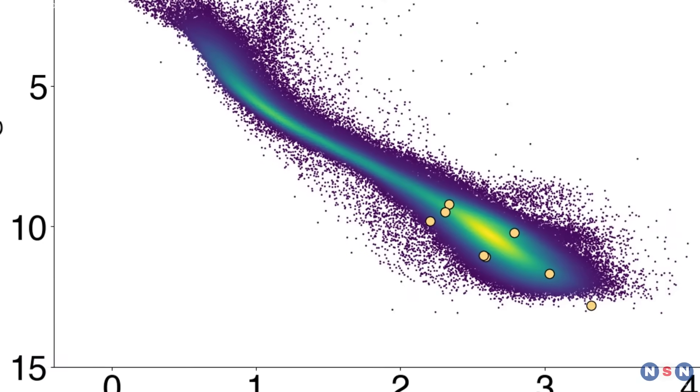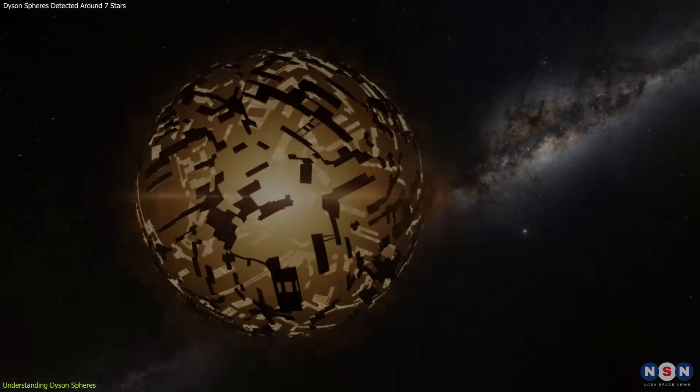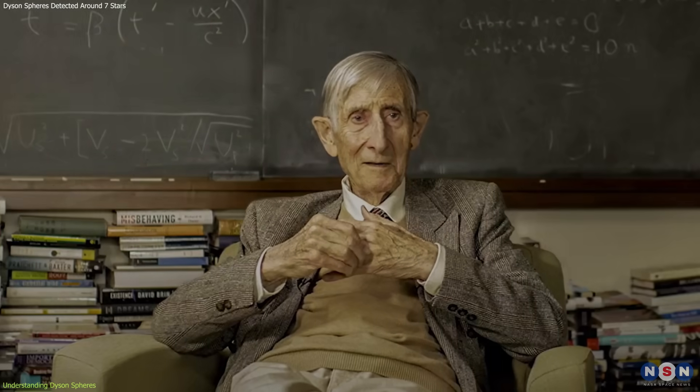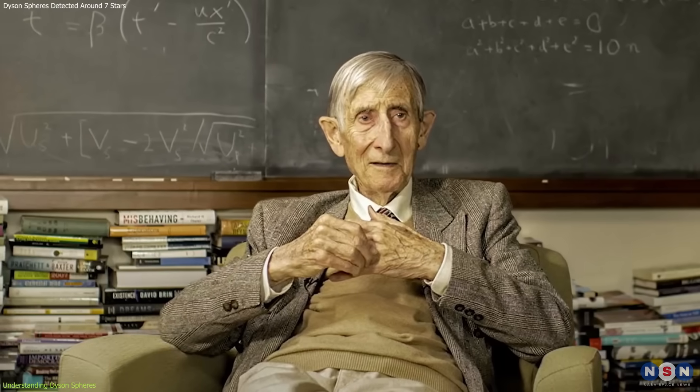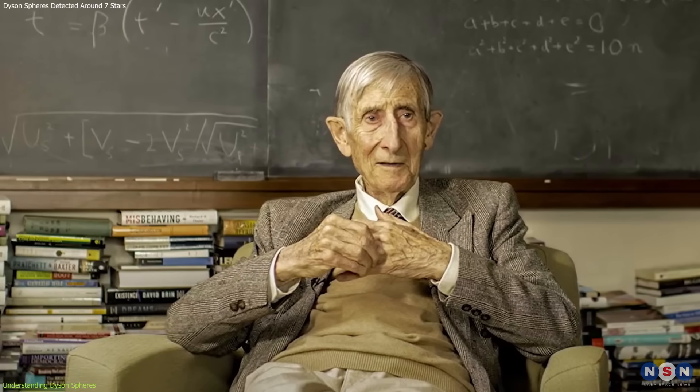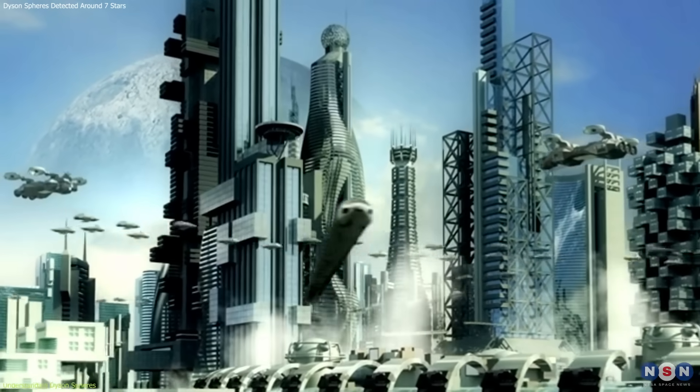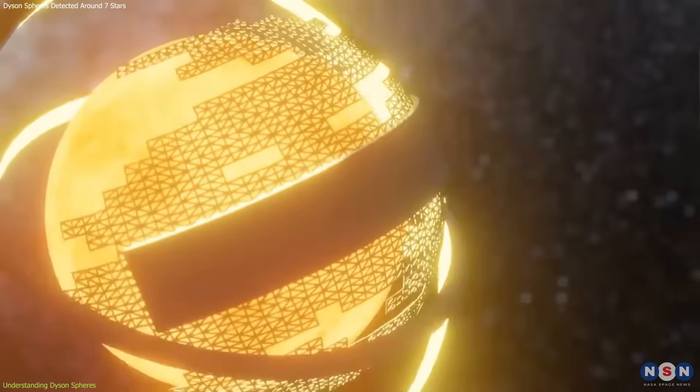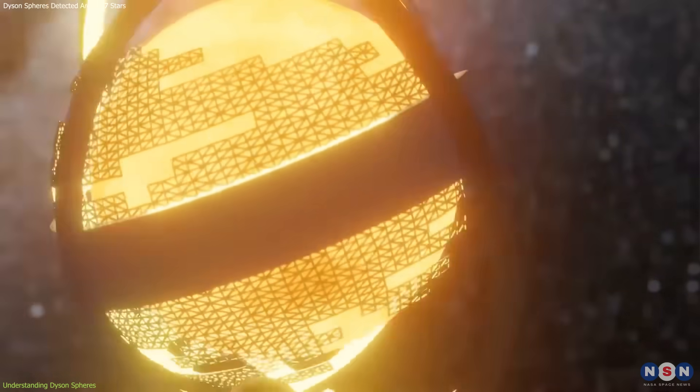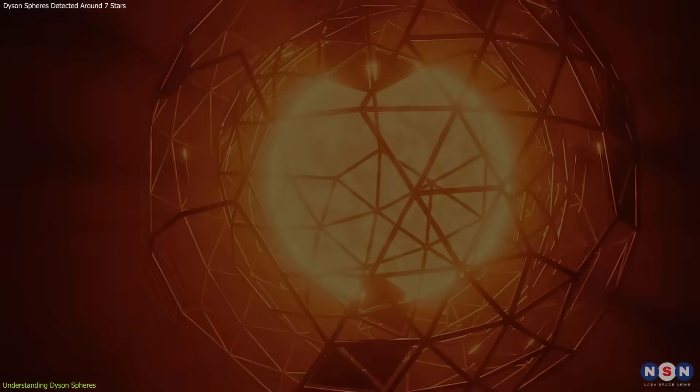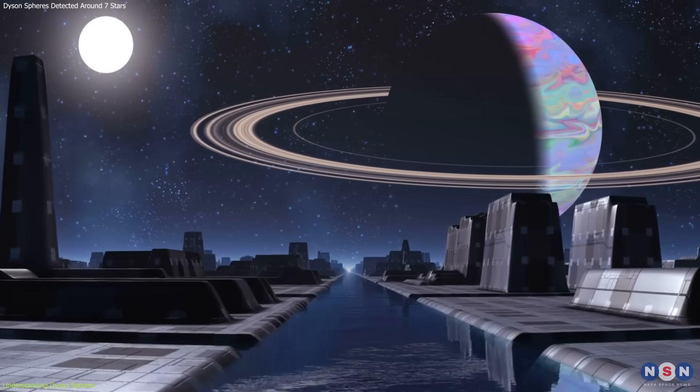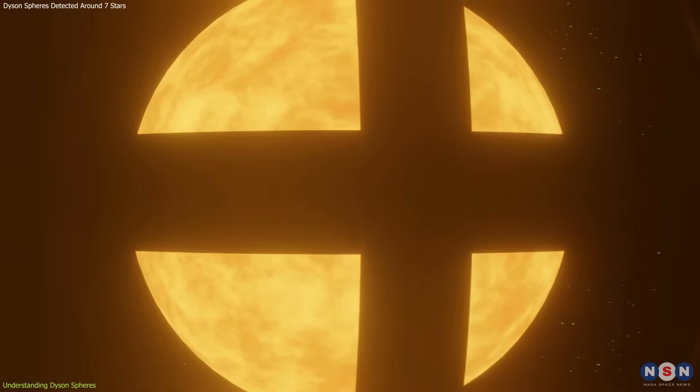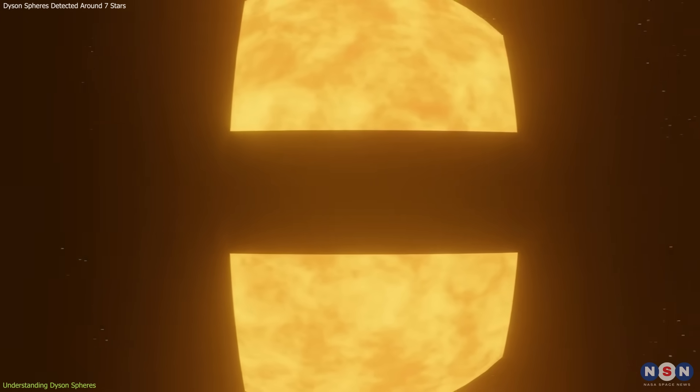To appreciate the significance of this discovery, we need to understand what a Dyson Sphere is and its theoretical formation. The concept, first proposed by physicist Freeman Dyson in 1960, suggests that a highly advanced civilization might build a massive structure around its star to capture and utilize its energy output. His idea was inspired by the realization that as civilizations grow, their energy needs increase exponentially. To sustain this growth, they would need to harness their star's energy more efficiently.